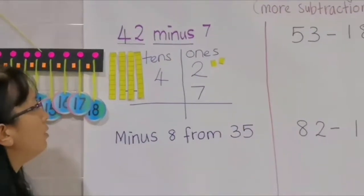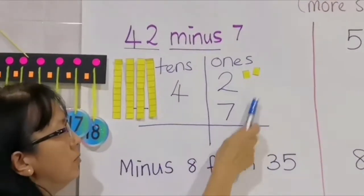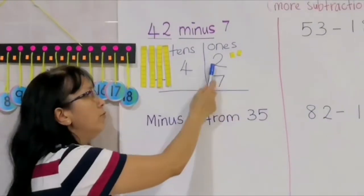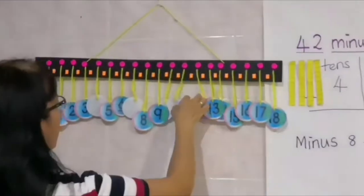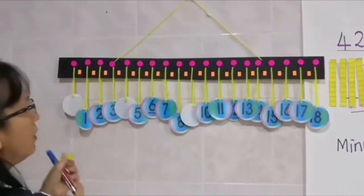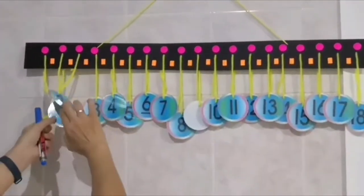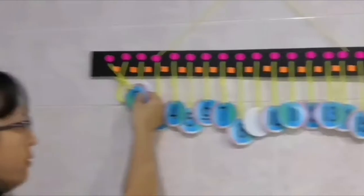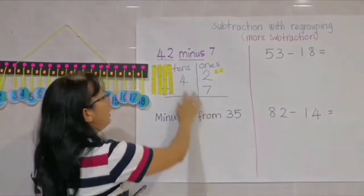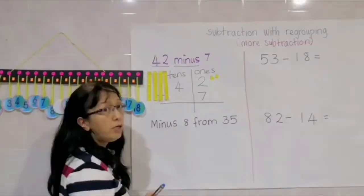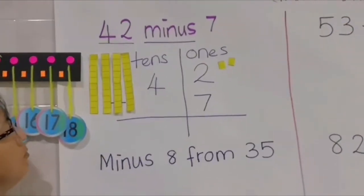So we have 2 ones. Now, how do we want to do 2 minus 7? Down here is 7. Is it enough for 2 to take away 7? We can see from the number line — we start from 2 and try to take away 7, counting 1, 2, 3. Is it enough? No, so we cannot subtract. What should we do? We should regroup from place value tens.